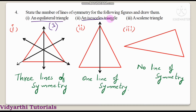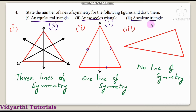Next, isosceles triangle — two sides are equal and the other side is different. For an isosceles triangle, there is only one line of symmetry. Answer: one line of symmetry. What is a scalene triangle? A scalene triangle means no two sides are equal — all three sides are of different measurements. If we try to draw a line of symmetry, we cannot — there is no line of symmetry for a scalene triangle.